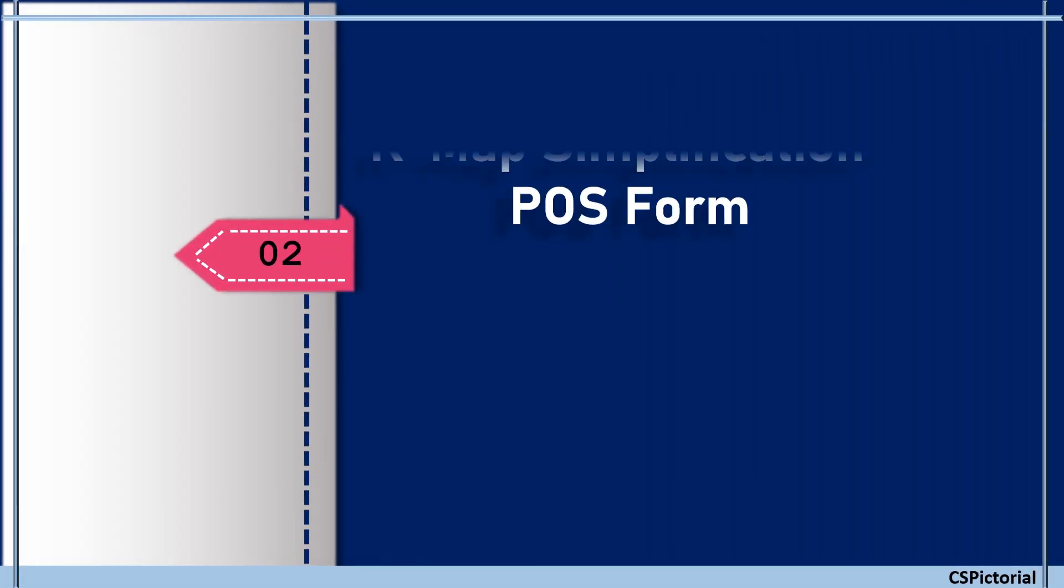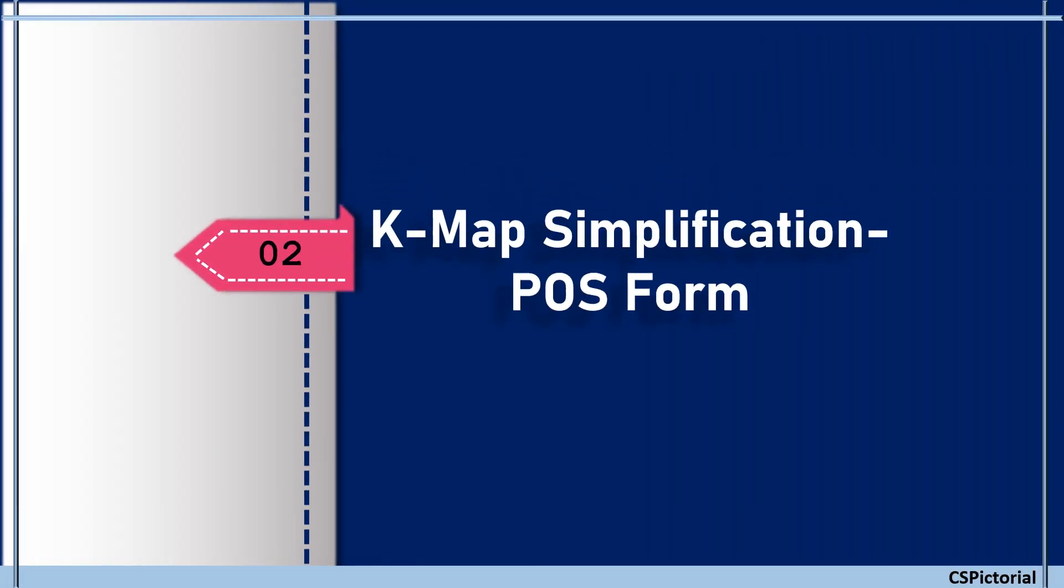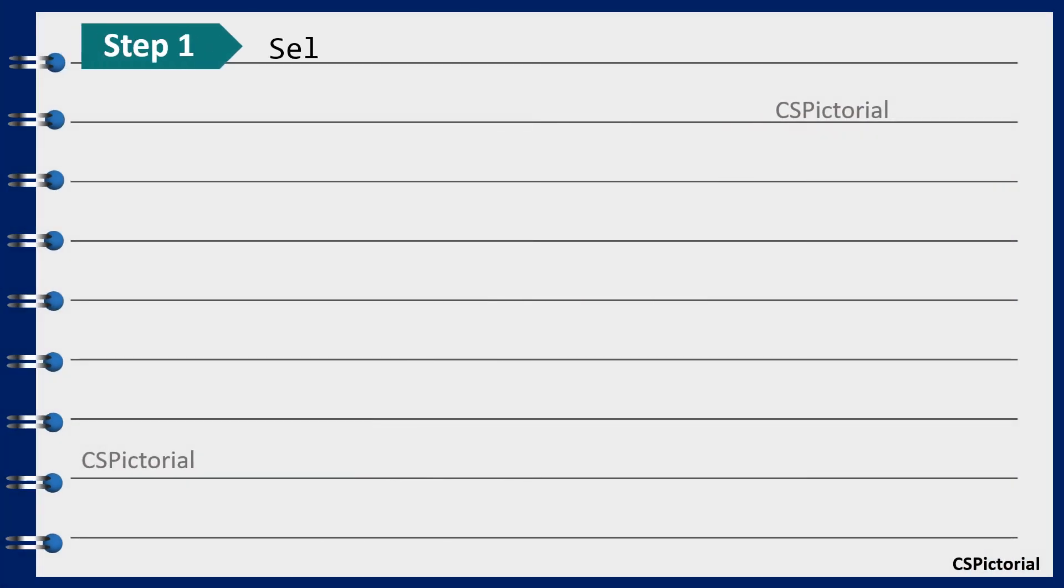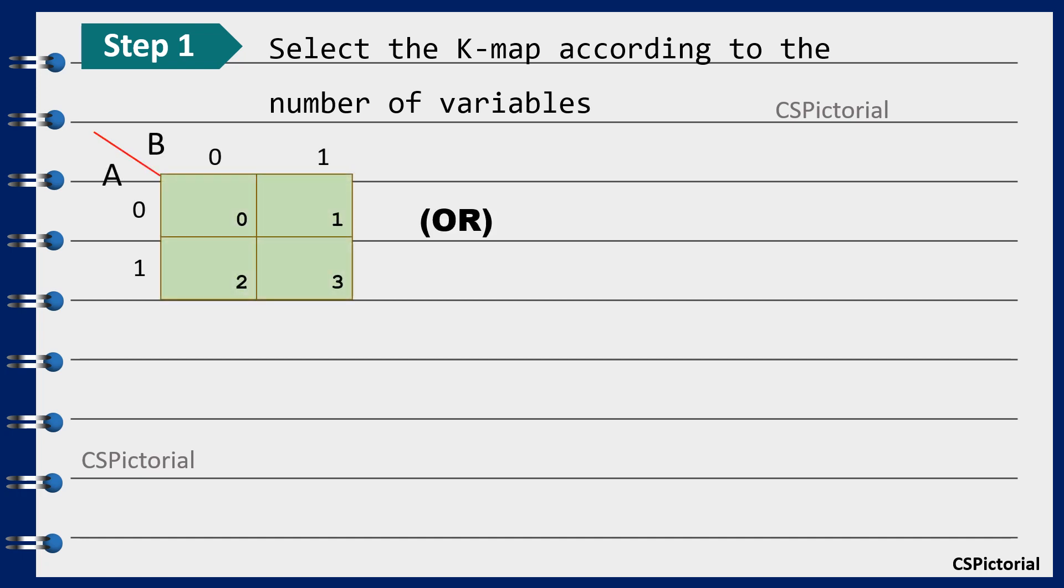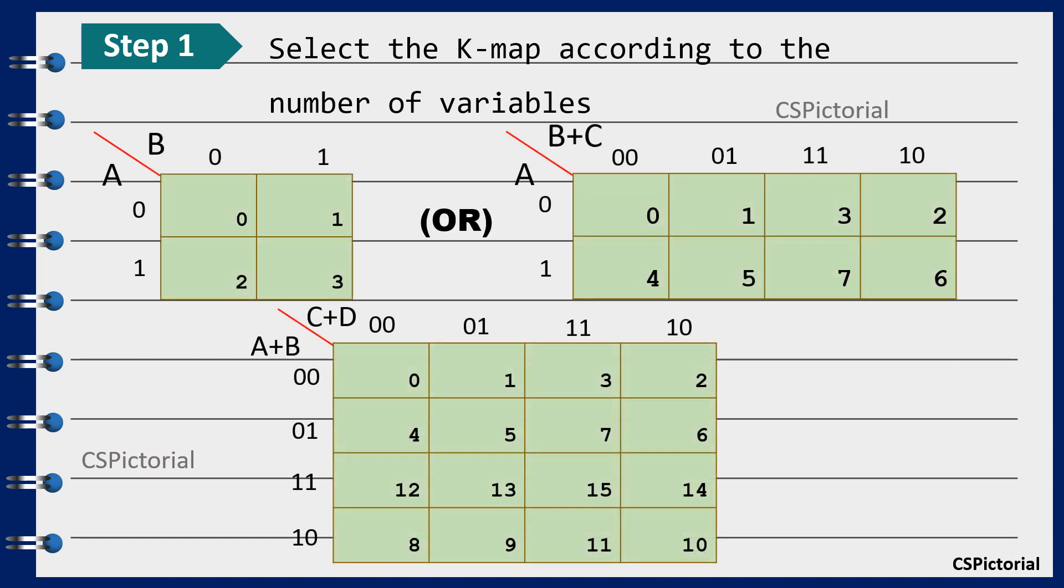Now let's take out the k-map simplification procedure step by step if the given Boolean function is in product of sums form. Repeat the same steps as done for SOP form. First select the k-map according to the number of variables involved in the Boolean expression or the Boolean function.